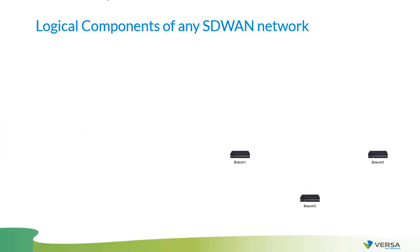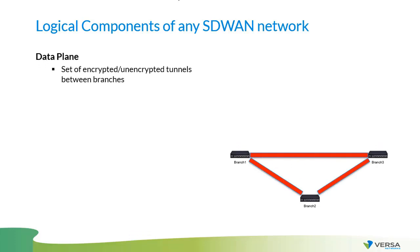Now let's review the logical components of any SD-WAN network. The very first component is the data plane. The data plane is a set of encrypted — or possibly unencrypted — tunnels between branches. For example, if a user connected to branch one wants to send a file to a user at branch two, the file is sent using the data plane through those tunnels. The same applies to phone calls or any other communication between users.